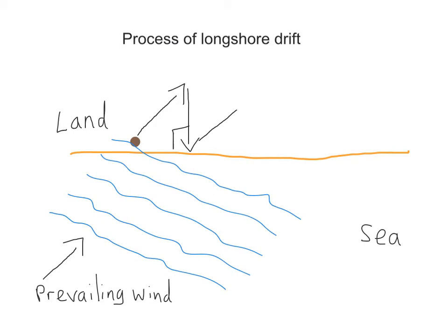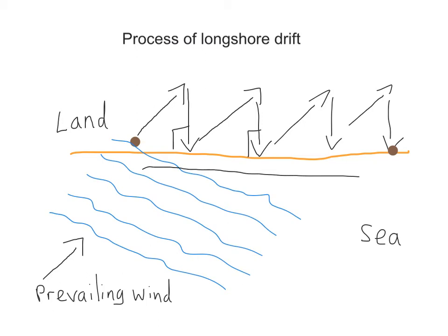The swash will then move the pebble at an angle up the beach and the backwash again will move it back down at right angles. This zigzag pattern continues along the beach and the pebble eventually will end up here. We can categorically say that the direction of longshore drift therefore is from west to east.